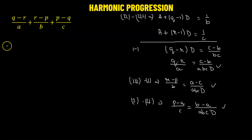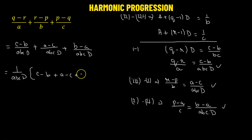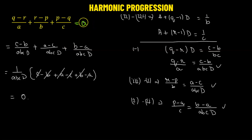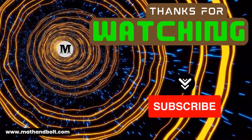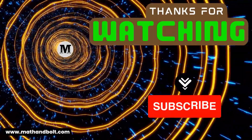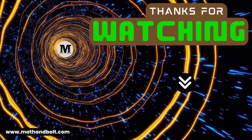Now we substitute these three values into the expression and add them together: (c minus b) plus (a minus c) plus (b minus a), all over abc·d. Taking 1 over abc·d as the common factor, we get c minus b plus a minus c plus b minus a. The terms b and negative b, c and negative c, a and negative a all cancel out, leaving zero. So the value of this expression is 0.